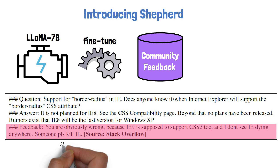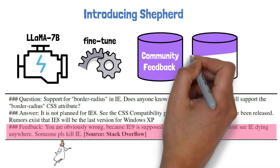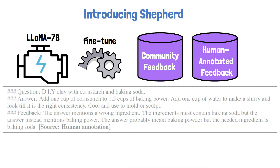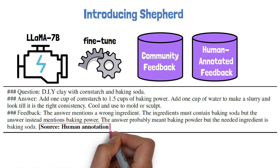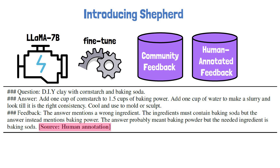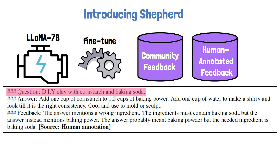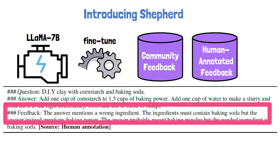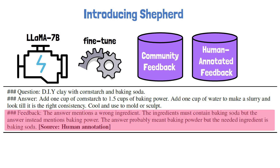The feedback also wishes for someone to kill IE, and of course by now someone probably heard this person's wishes. The second dataset is human annotated feedback data. Here, the source is a human annotation with the same three-part structure. The question is about do-it-yourself clay, the answer refers to baking powder as an ingredient, and the feedback — provided by a human annotator — mentions an issue since the question specifically asks about baking soda, not baking powder.